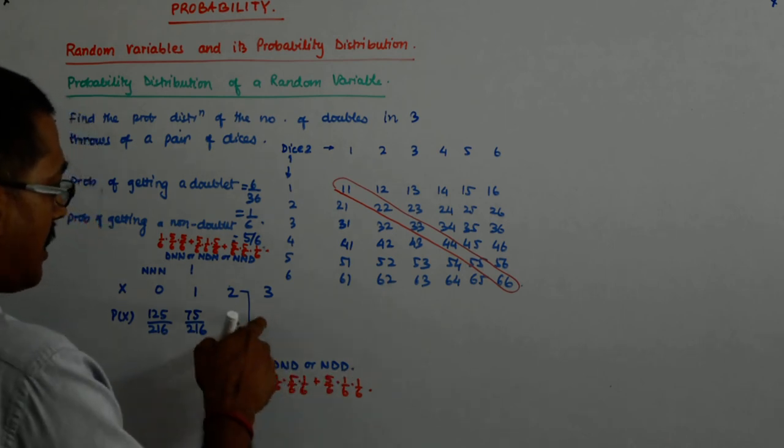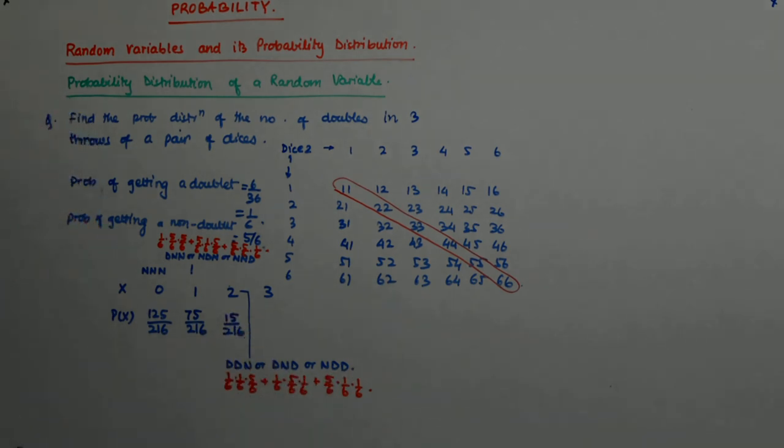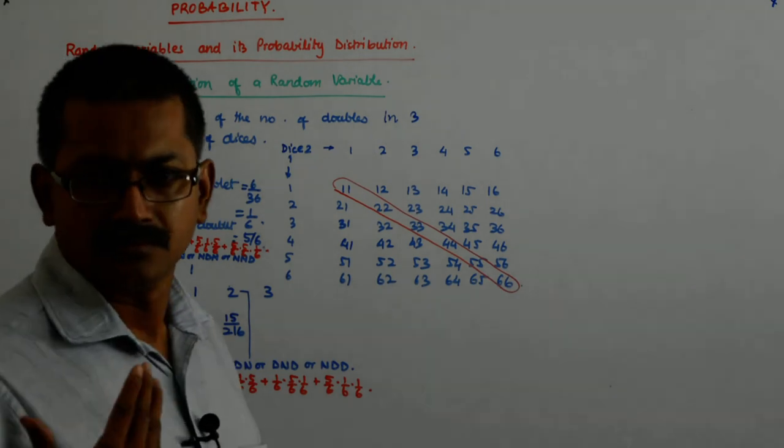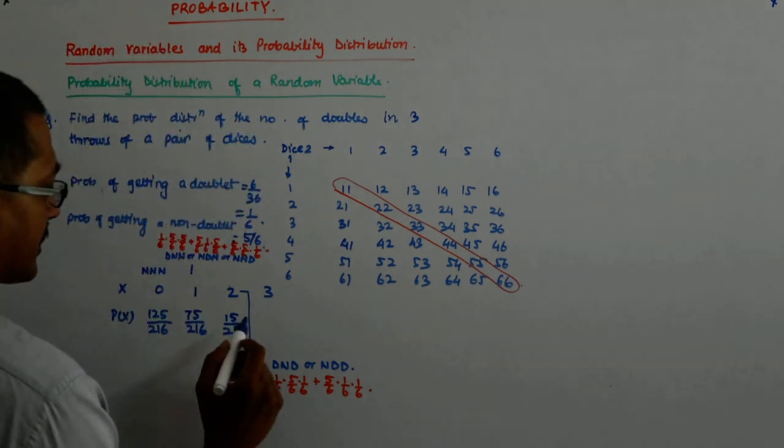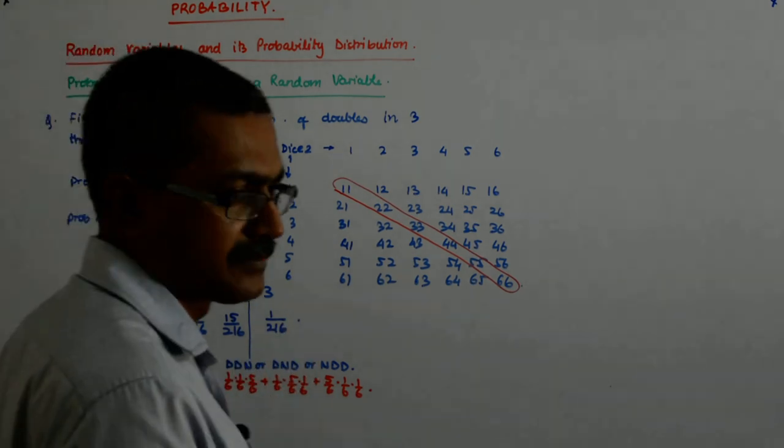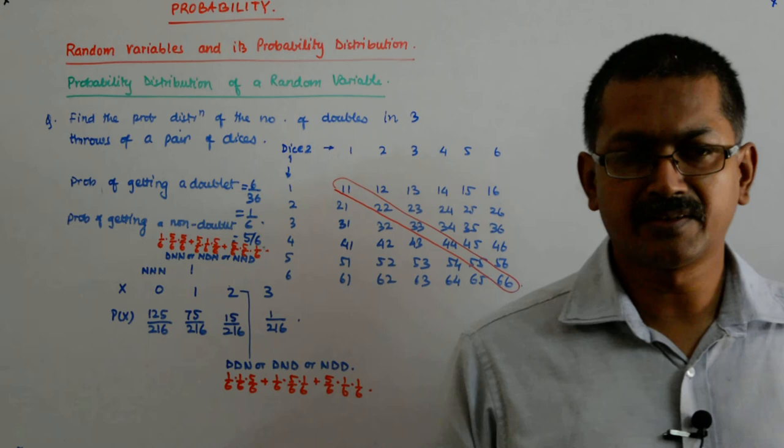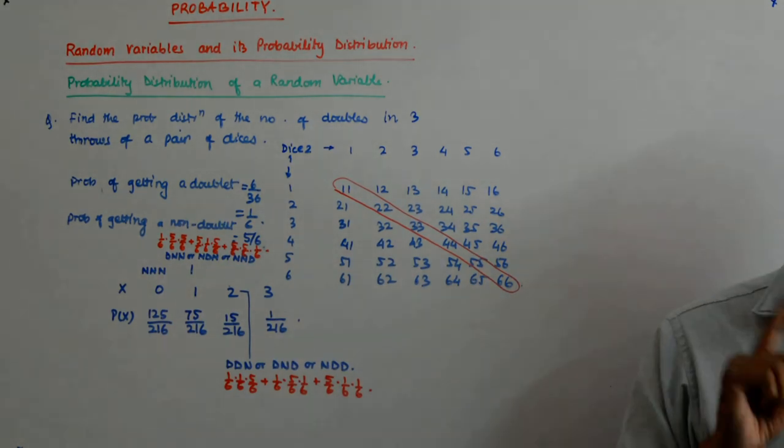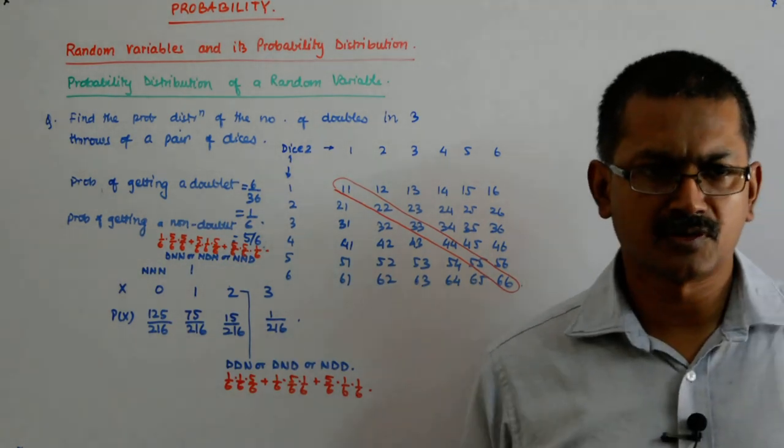And all the three doublets? One by six, one by six, one by six. So one upon two sixteen. Sum them? One twenty-five plus seventy-five is two hundred, plus fifteen is two fifteen, plus one is two sixteen upon two sixteen, which is one. Simple.